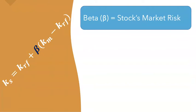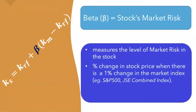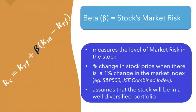Beta measures the stock's market risk — it's a measure of the level of market risk in the stock. Specifically, it's the percentage change in the stock price when there's a 1% change in the market index. The market indexes we refer to are like the S&P 500 or Jamaica Stock Exchange Combined Index. These measure what is happening in the overall market, and we want to see how a 1% market move impacts this particular stock.